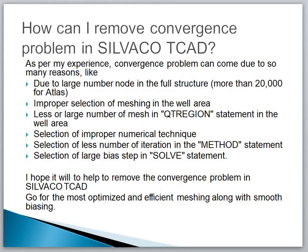The second error you may face during simulation is the convergence problem in Silvaco TCAD. As per my experience, the convergence problem can come due to many reasons. The first reason is a large number of nodes in the full structure. If your meshing is quite coarse, you will find this type of error.